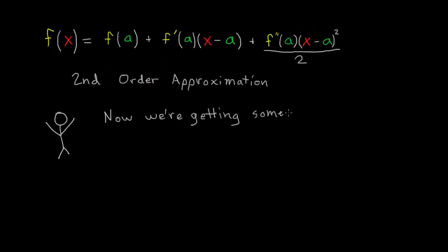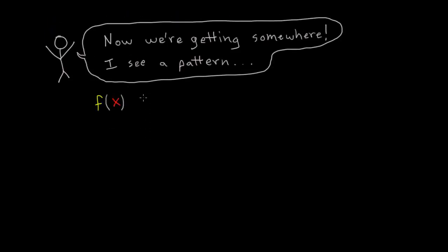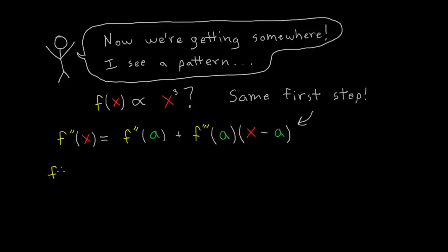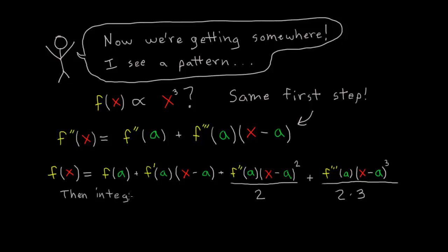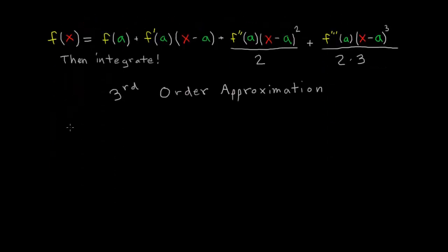This approximation is the best yet, but since Taylor loves math and wants to keep having fun, let's see what happens if F depends on X cubed. Well just like before, Taylor starts out by writing an equation for a line. But this time the equation is for the second derivative. So to get back to F, Taylor needs to integrate twice. Now we have a third order approximation.